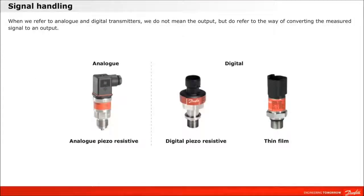Before we go through the technologies on the following pages, we need to clarify the difference between Danfoss analog and digital pressure transmitters. When we at Danfoss talk about a digital pressure transmitter, we do not mean the output. We refer to the way of converting the measured signal to an analog output. Currently, we do always have an analog output — only the converting is either in an analog or in a digital way.